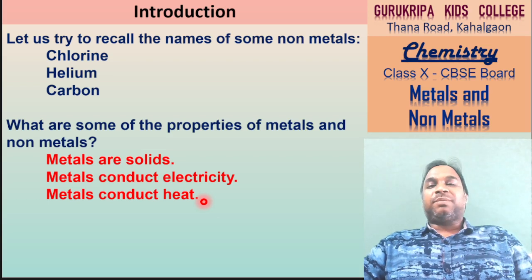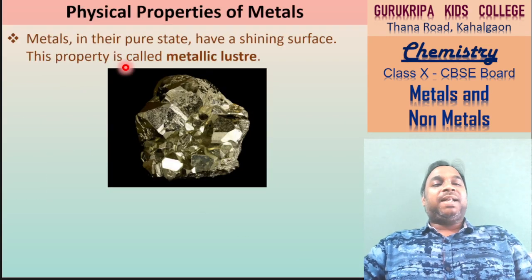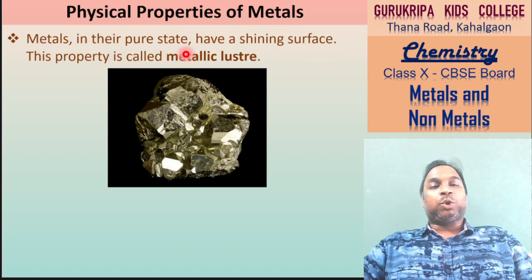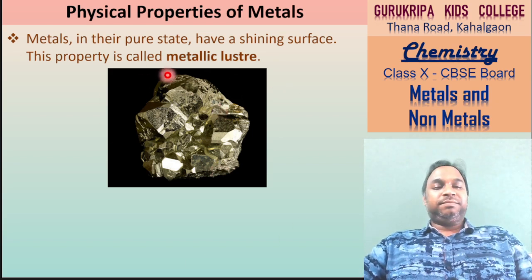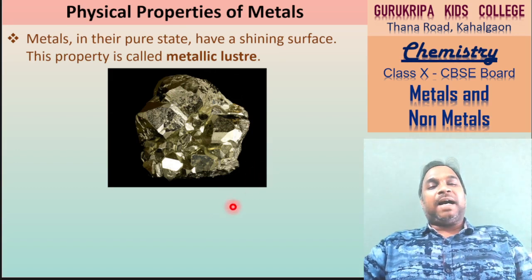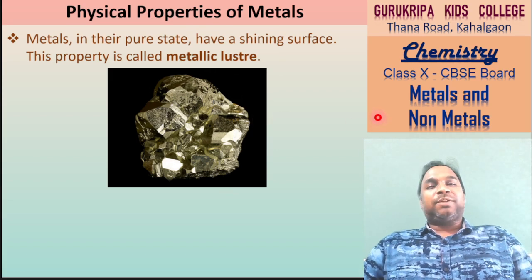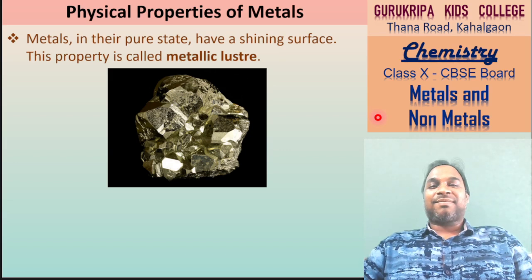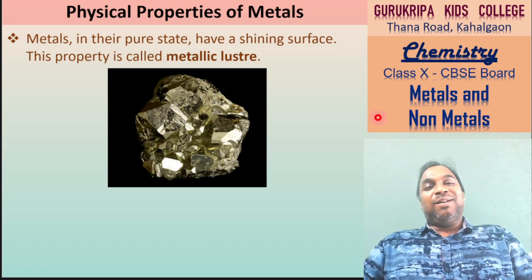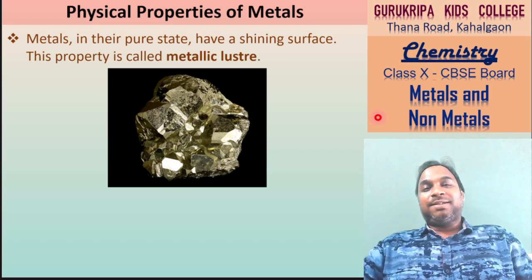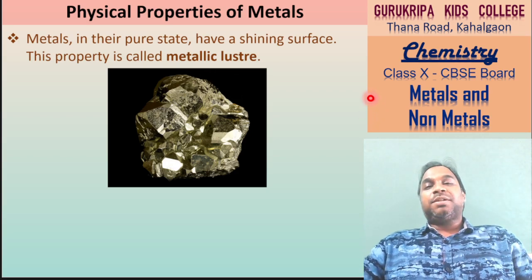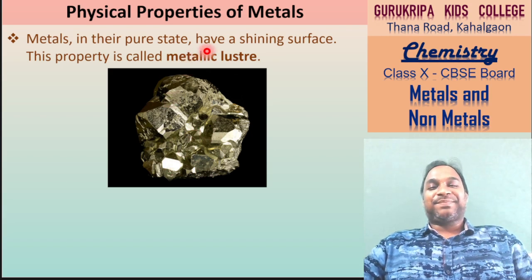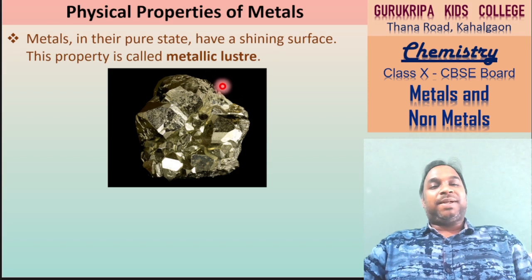Detail में start करेंगे अब हम लोग. Physical properties of metals बहुत अच्छे से detail में पढ़ना है. सबसे पहला property - metals in their pure state have a shining surface. This property is called metallic lustre. जो भी metal हो, चमक रहा है. Iron nail, kaati - जंग लगने के बाद खराब हो जाती है, लेकिन जब नहीं होती तो चमकीली रहती है. Gold, silver तो चमकते ही हैं. Aluminium भी चमकता है. Mercury भी चमकता है. जितने भी metals होते हैं सभी चमकते हैं - they have a metallic lustre.